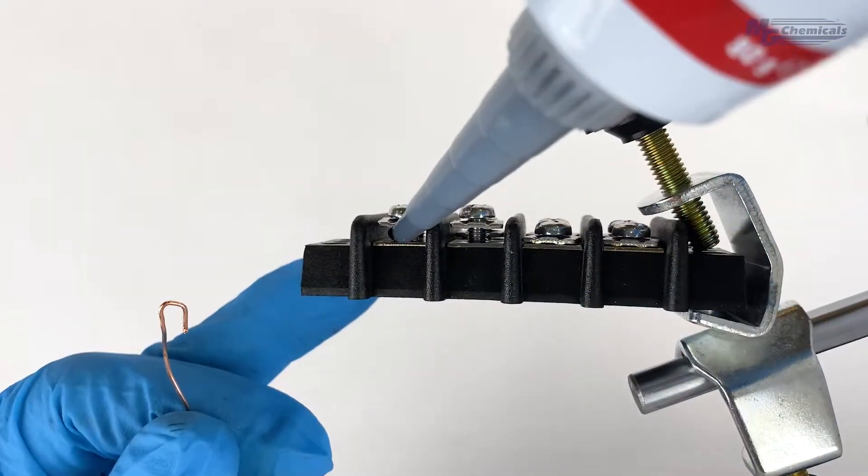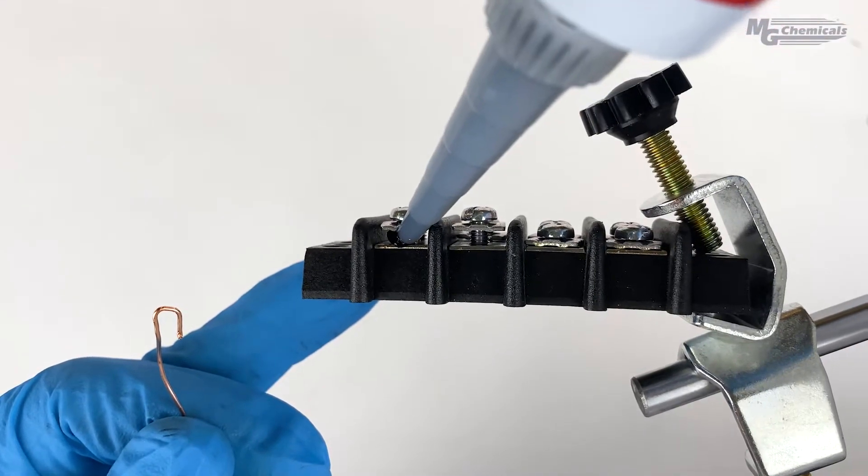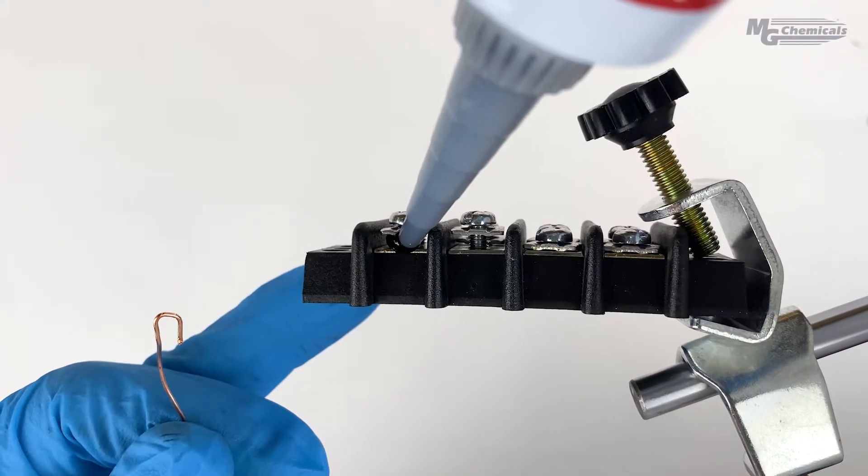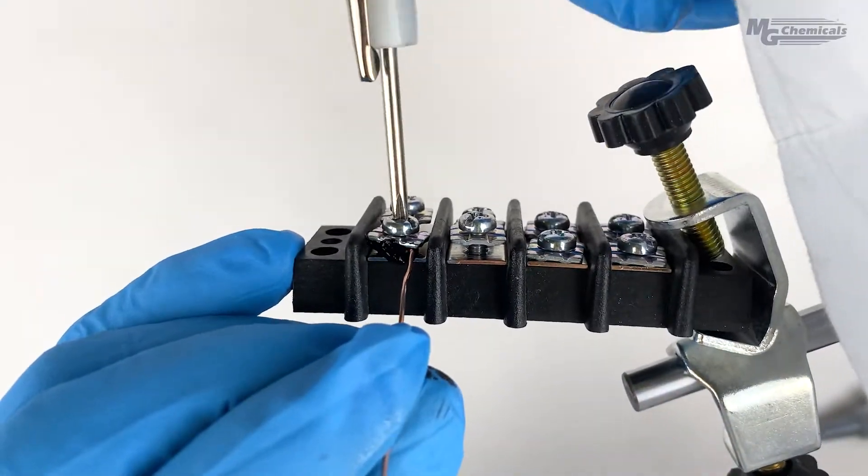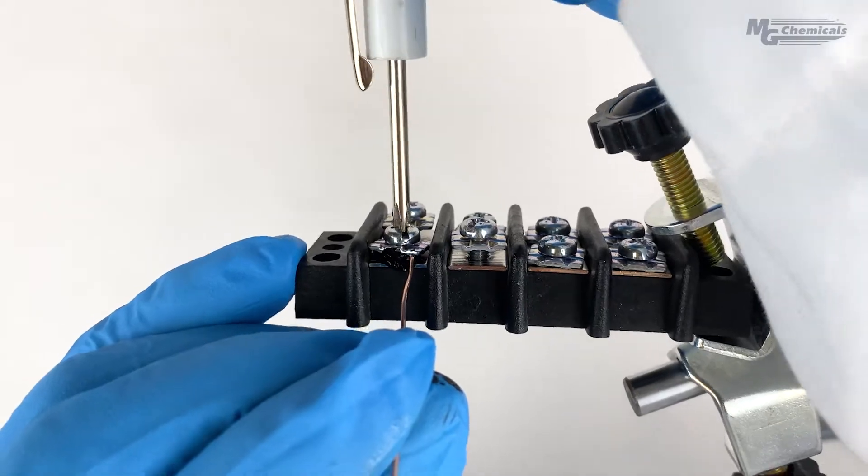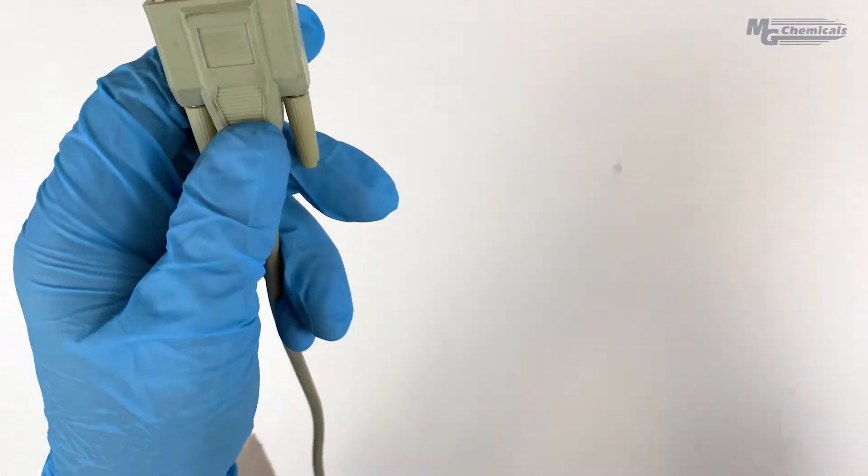Electrical grease is most commonly used as a gap filler to join irregular surfaces together. In this example, the grease is placed between the catch screw and contact. When tightened, the grease ensures there's no gap, ensuring a complete path for the current to flow.